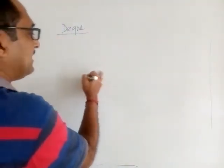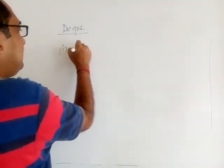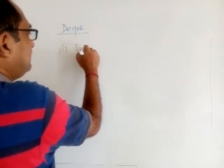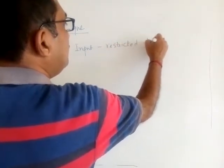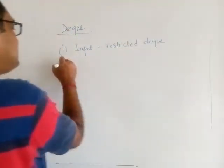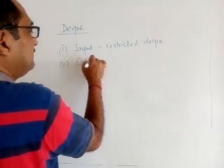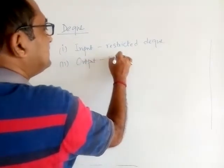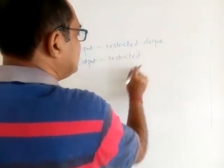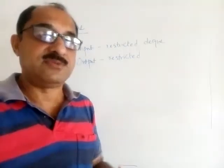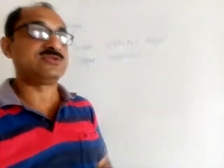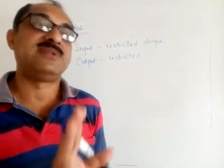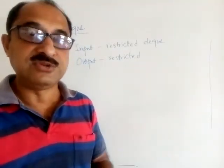DQ is divided into two categories: one is called Input Restricted DQ and another is called Output Restricted DQ. You need to know these by their names and understand the concept, because a two-mark question could ask what an output restricted queue is, so you should be able to write and explain these two topics.